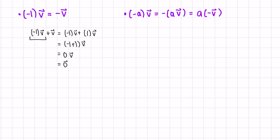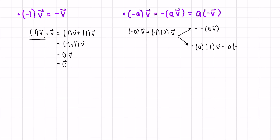The last property is that we can change the location of the negative sign. We have negative a times v, which equals negative one times a times v. By associativity of scalar multiplication, this is negative one times (av), which equals the negative of av. Since negative one and a are just numbers we can change the order, giving a times (-v) as well. That concludes the extra vector space properties.